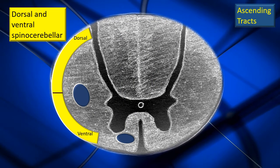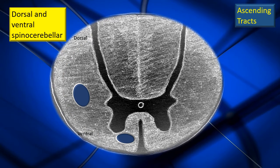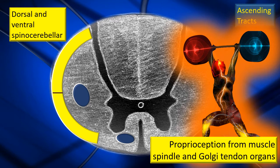Next, the dorsal and ventral spinocerebellar tracts. It is very important to note that they are located right underneath the surface in the lateral funiculus. They handle proprioceptive impulses from muscle spindles and Golgi tendons, raising them up the spinal cord. They will use the peduncles through which they reach the cerebellum — meaning this tract gives sensory inputs to the cerebellum through the peduncles in the brainstem, in addition to other tracts giving information to the cerebrum.